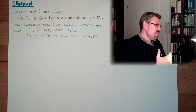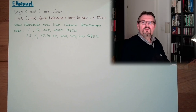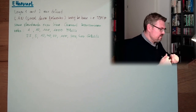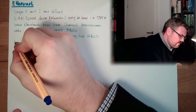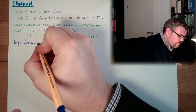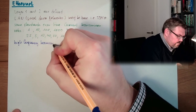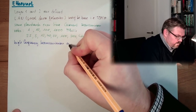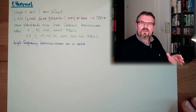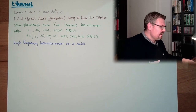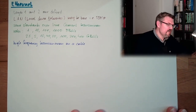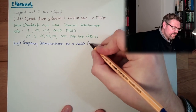So what is Ethernet? The idea is that Ethernet is a high frequency transmission on a cable. There are several cables in use: there are coaxial cables, there are twisted pair cables, and there are even fiber optic cables. It is a high frequency transmission on a cable.